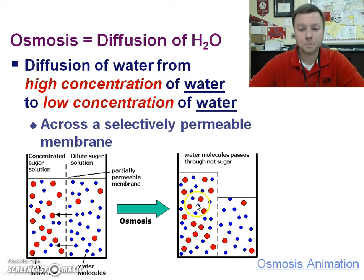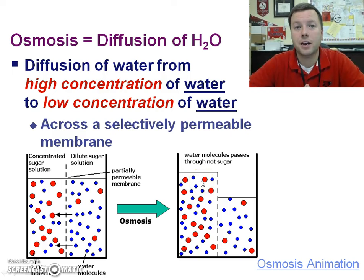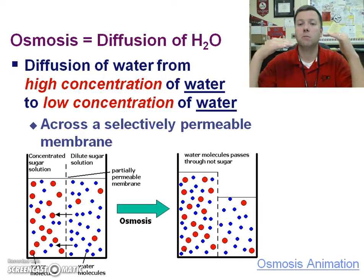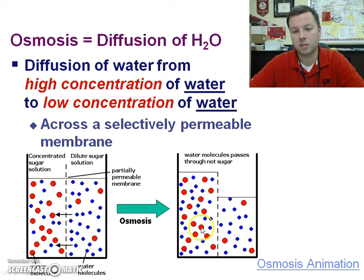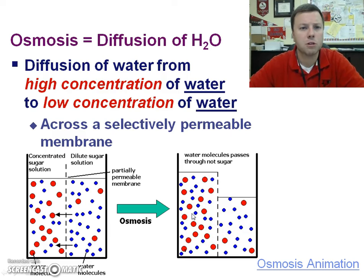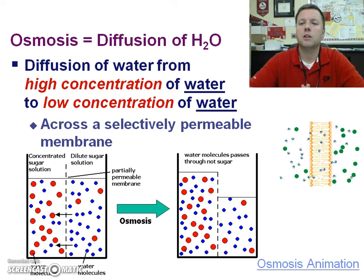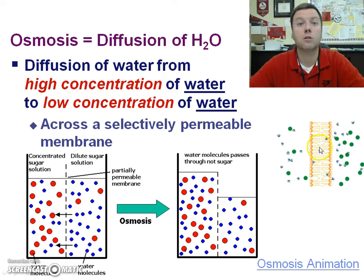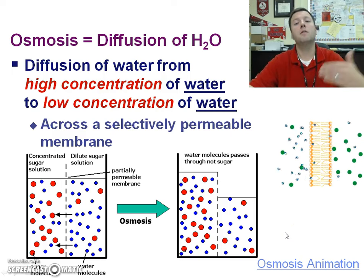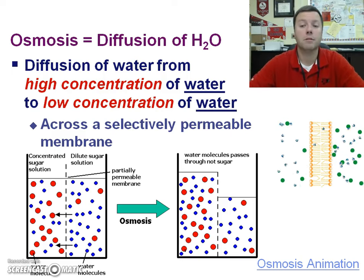This is similar to when you get a drink from a fast food place — you might have a lot of ice in one cup and less in another. There's actually a different amount of soda in both cups, even though they start out looking like they're at the same level. As water moves from one side to the other, the water level rises because the extra sugar particles take up room too. You can see the blue water molecules going through easily, whereas the green ones are bouncing off the selectively permeable membrane.